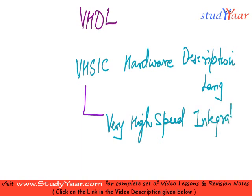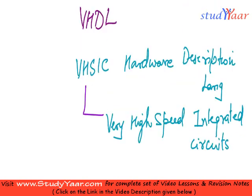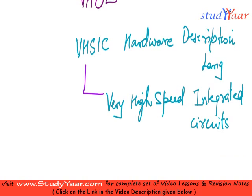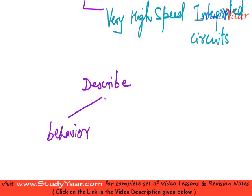VHDL is basically used to describe digital systems of any complexity level — from simple gates to complex microprocessors. You can use VHDL to describe how your digital systems behave. Your description is basically along two lines: you can either describe in terms of its behavior, or you can describe in terms of its structural components or structure.